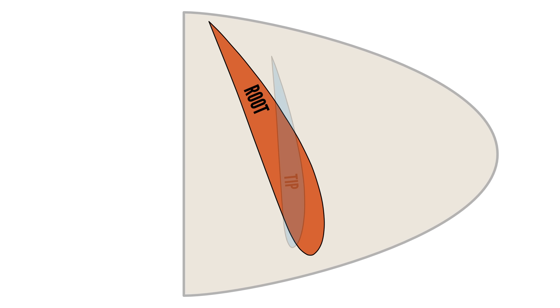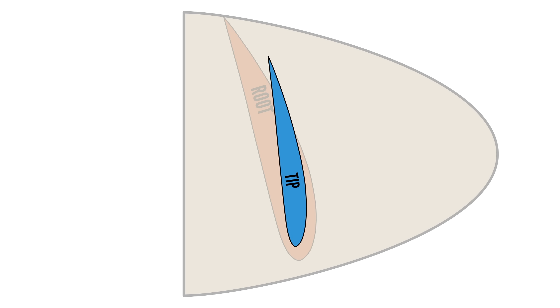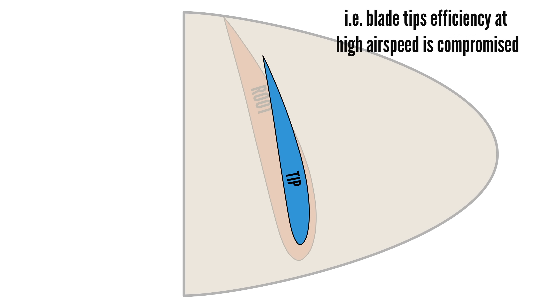However, the lower blade twist on the E-PROPS design introduced a few challenges. First, with a lower angle of attack at the blade root, takeoff thrust is compromised. Secondly, the higher angle of attack at the blade tips increases drag at high speeds.